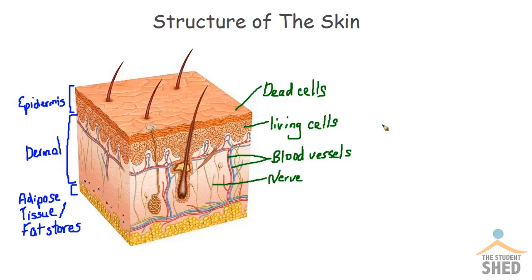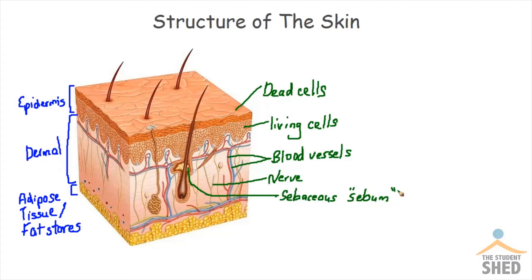Also in the dermal area are sebaceous glands, and we can see them right there. The sebaceous glands produce a substance called sebum, which is an oily substance that lines your hair follicles and also the outside of your skin. It's also what helps to make your skin water resistant.